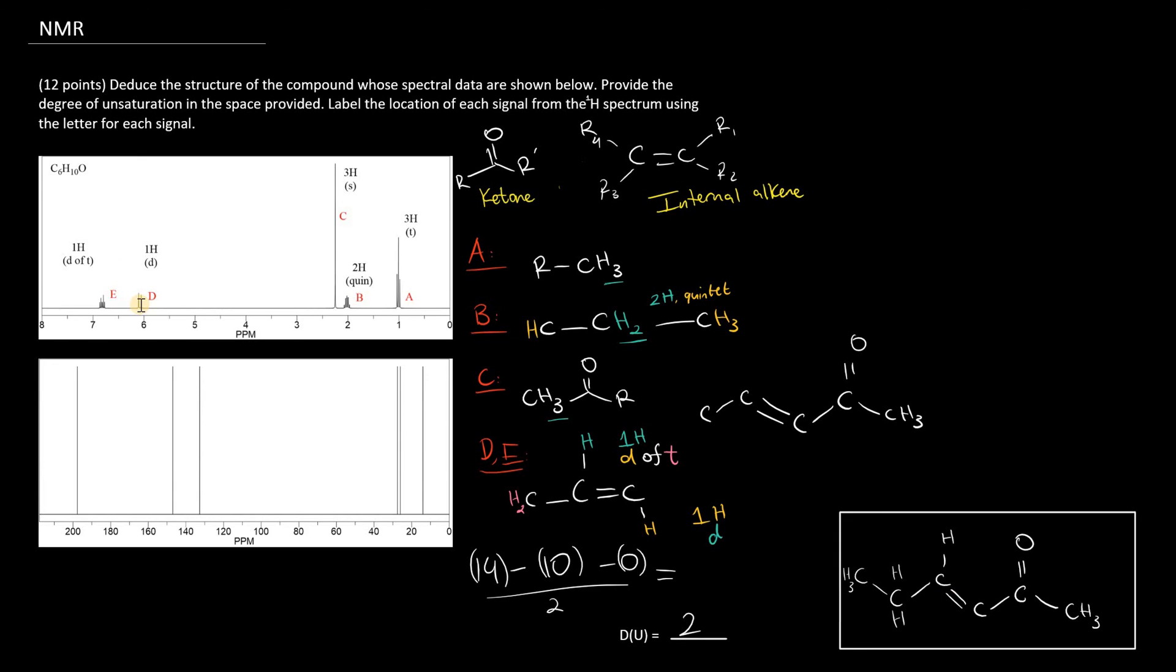Signal D, 1H doublet, that would be right here. And signal E, doublet of triplet, split by the trans partner, that would be a doublet, just like we observed here. And towards the left, by the CH2 group, that would split it into a triplet. So, this would be our final answer.